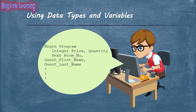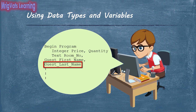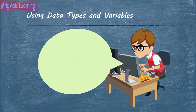Even though you can use any name to create a variable, it is a best practice to use meaningful variable names. This makes sure that you know the reason for which you created the variable, which not only avoids confusion but also helps in understanding and debugging the program. For example, if you want to accept room number and guest name, you can use room_number, guest_first_name, and guest_last_name as variable names instead of NO and NM. Notice that variable names must consist of a single word.